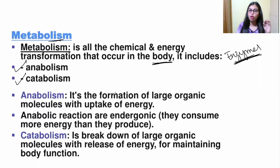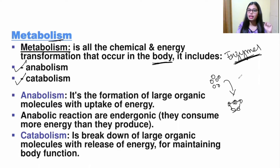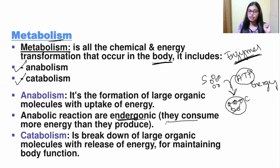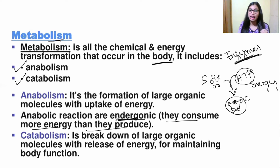So first of all, what is anabolism? It is the formation of large organic molecules with uptake of energy. From small molecules, it will produce large molecules. In the anabolism process, energy is consumed. The energy currency is ATP. The anabolic process requires energy — that is ATP — to form complex molecules. This is simple molecule conversion to complex molecule, and it requires ATP. Anabolic reactions are endergonic, meaning they consume more energy rather than produce. Rather than producing energy, it will utilize energy for the function.